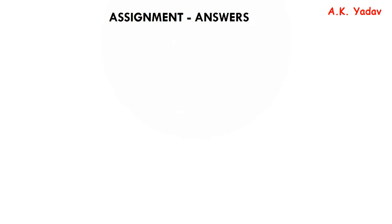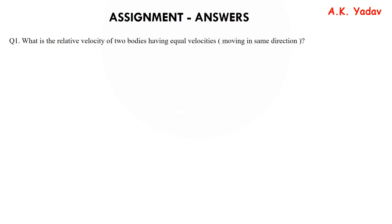Question number 1: What is the relative velocity of two bodies having equal velocities moving in the same direction? Answer: zero, because when moving in the same direction we subtract the velocities, and here the velocities are equal.